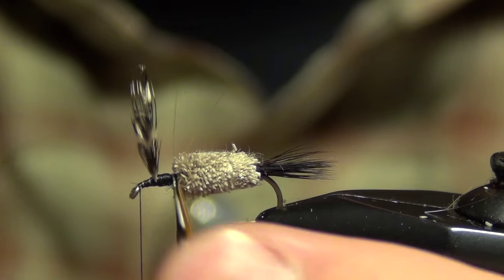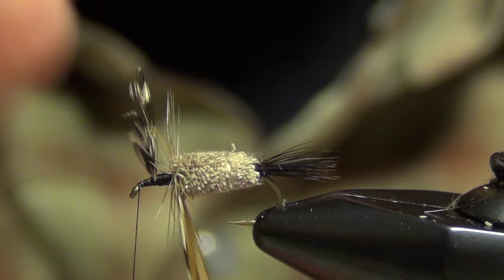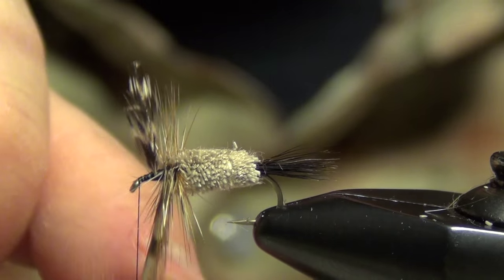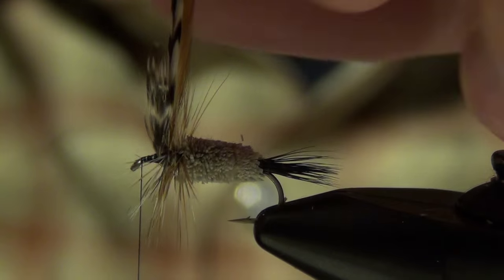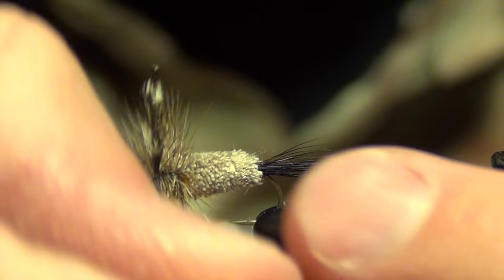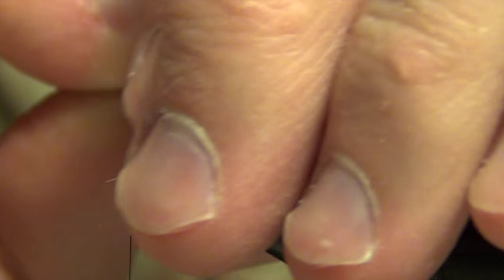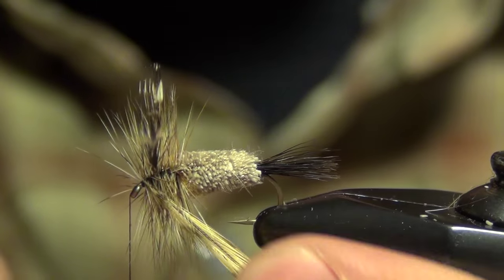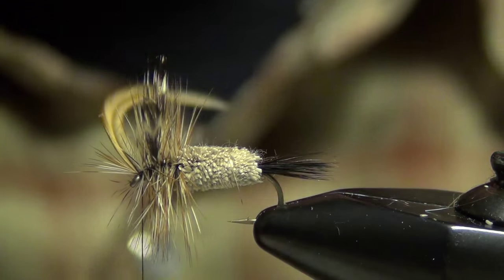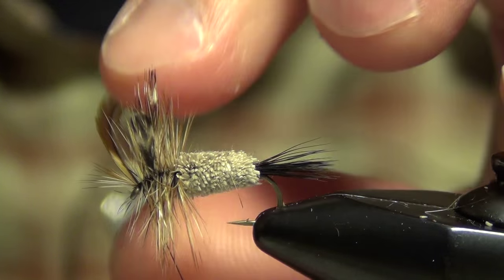Now I'm going to take that hackle. I'm just going to make that first wrap right up against that deer hair. Continue to work it forward until I get to my wings. Once I get to those wings, I'm just going to jump in front of them ever so carefully and wrap up towards the eye. Once I get to the eye, I can just capture those feathers, lay down a few wraps, and I can pluck them out of the way.